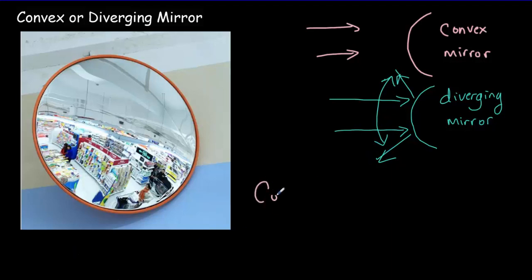A common use for a convex or diverging mirror is in store security. If you go into a Shoppers Drug Mart and look at the back wall, there will be a big convex mirror there. The employees look at that and they can see the entire panorama of the store, which makes it easier to detect shoplifters. So a common use would be in security.